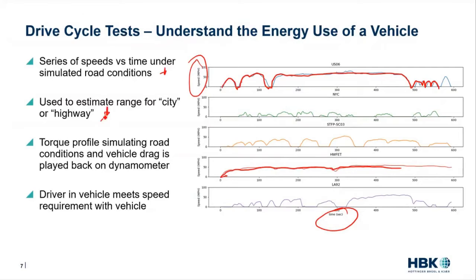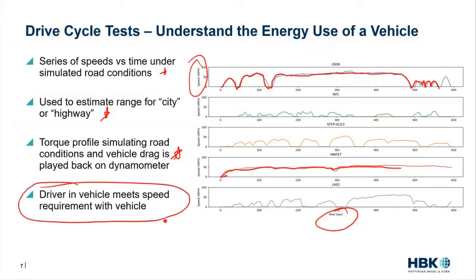We're going to be looking for city and highway mileage. There's going to be a torque profile that's simulating road conditions and vehicle drag. So we're really looking at how this vehicle will perform in a controlled scenario — how can we run these drive cycles and compare one vehicle to another as realistically as possible? There's going to be a driver that's actuating the pedal to match these speeds. So now we know what a drive cycle is: it's just a series of speeds versus time to replicate real-world scenarios.